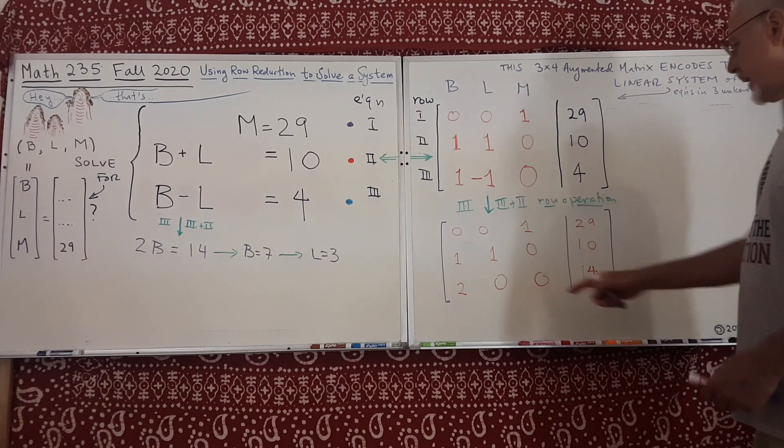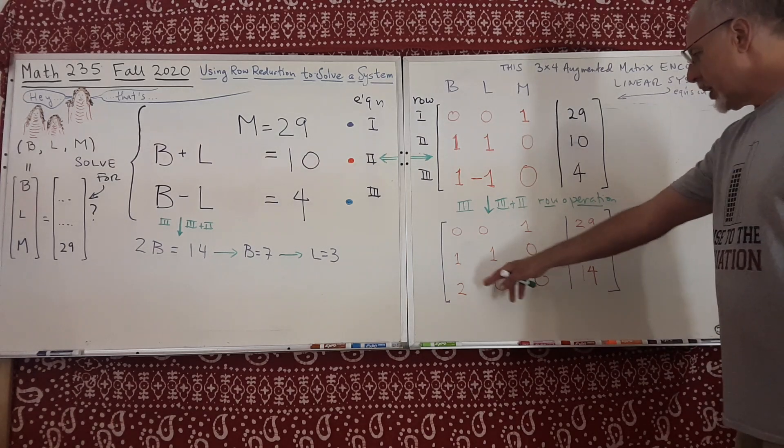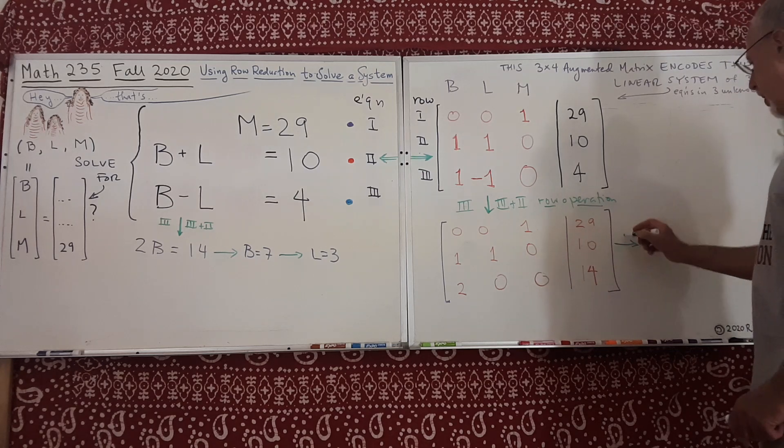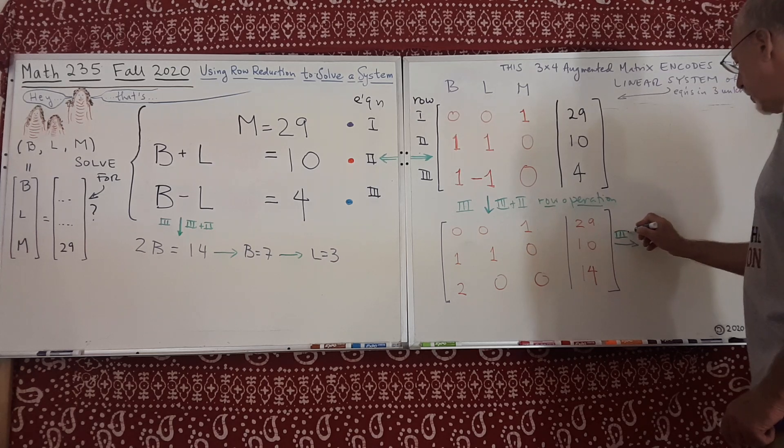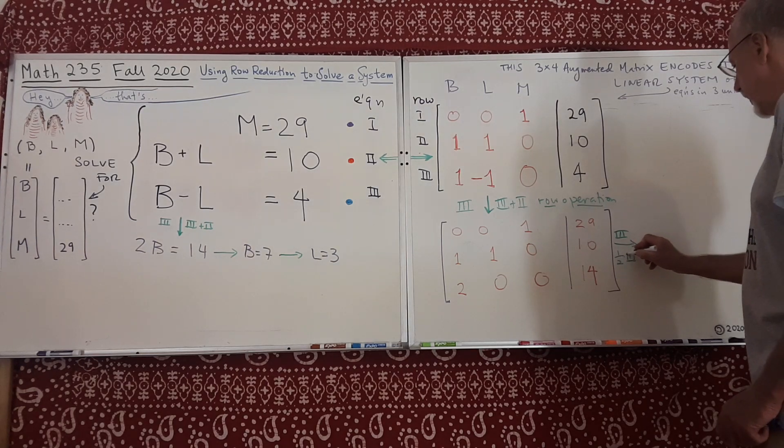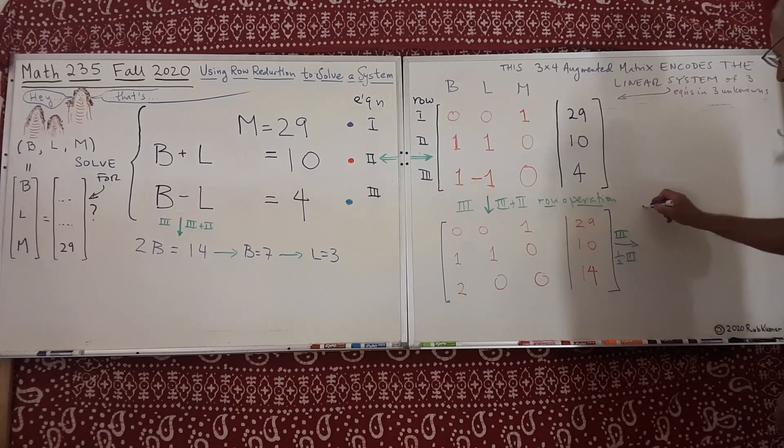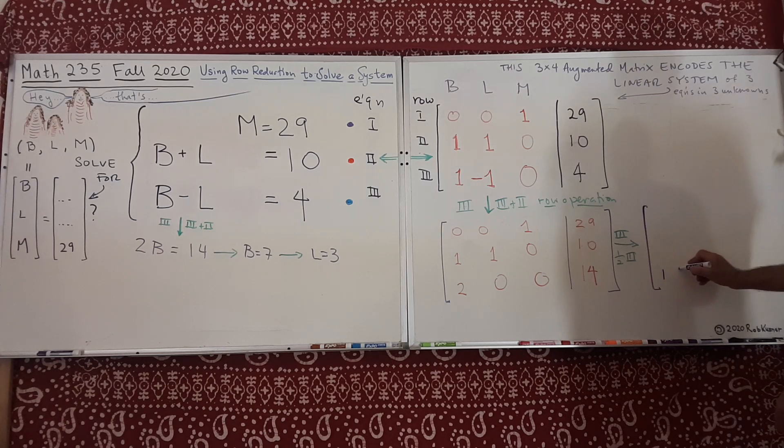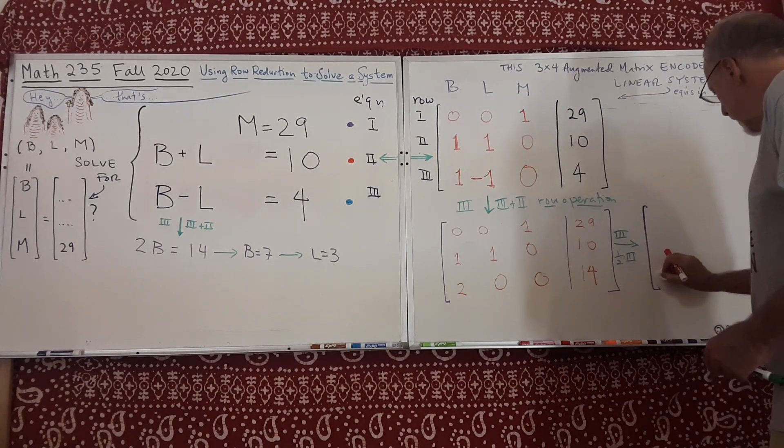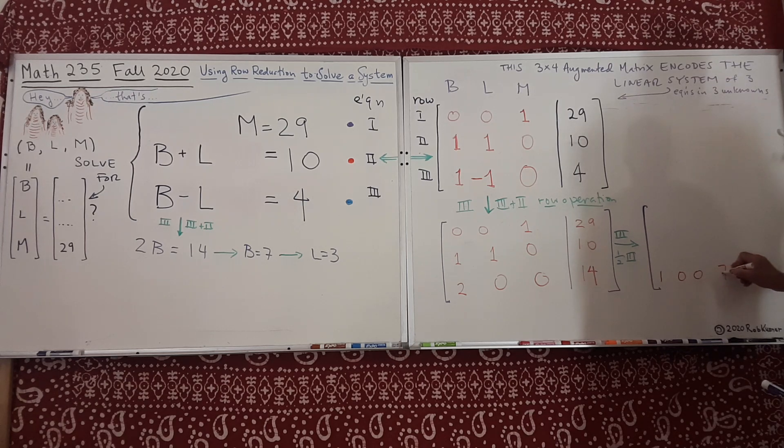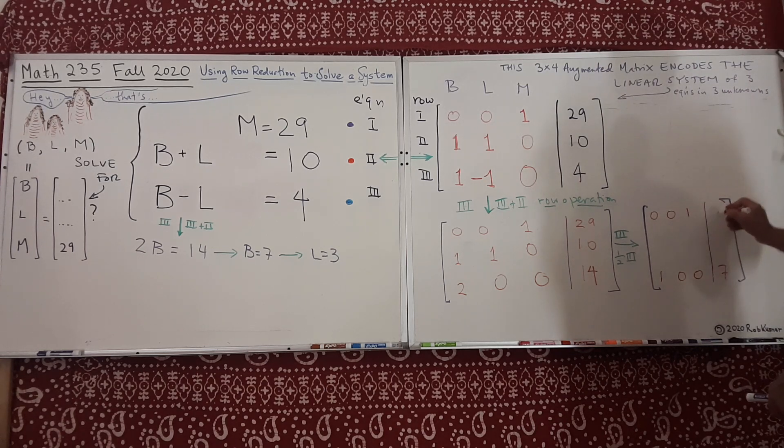Let's do another row operation. We're allowed to divide by a non-zero number, or multiply by a non-zero number. Same effect. And let's do that. So this is the step. I'm going to take the third row and I'm going to replace it by 1 half times the third row. So that would be one of the steps. If I do this, then I get 1, 0, 0, and then 7. There's the augmentation line. And I'll leave the 0, 0, 1, 29 at the top.